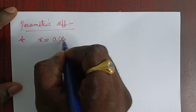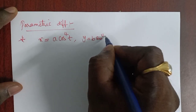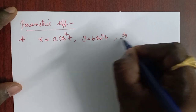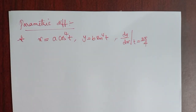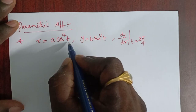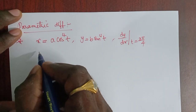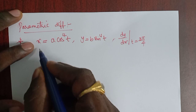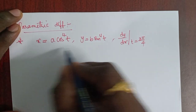Next is parametric differentiation. Suppose x = a cos⁴t and y = b sin⁴t. We need to find dy/dx at t = 3π/4. Since both x and y depend on t, we first find dx/dt and dy/dt, then use dy/dx = (dy/dt)/(dx/dt).